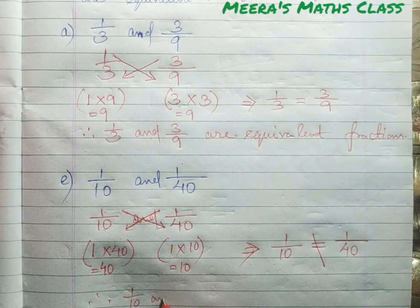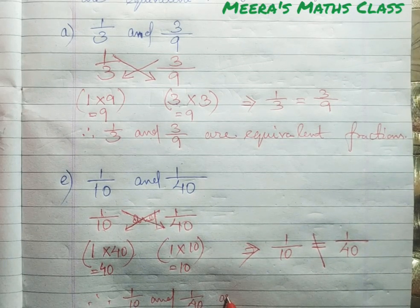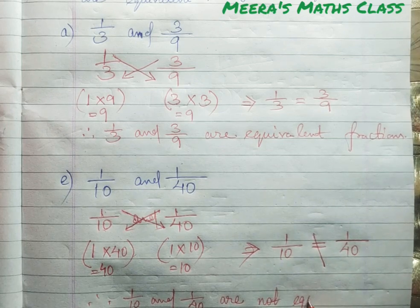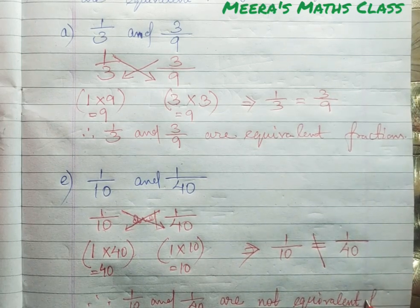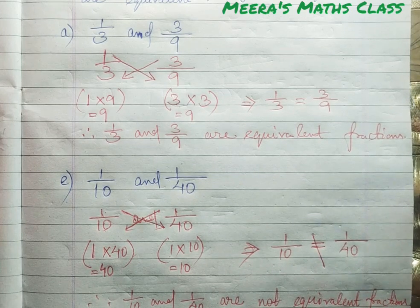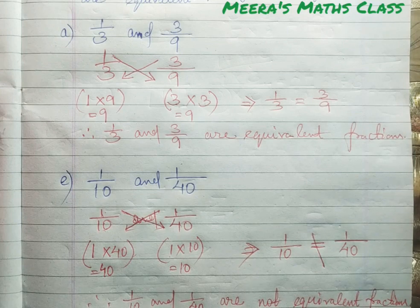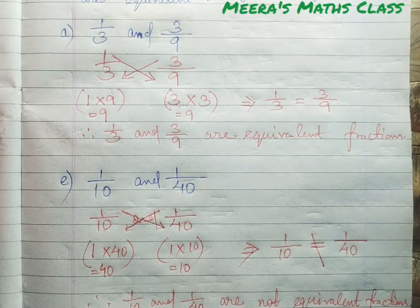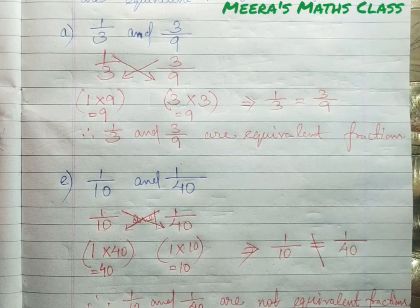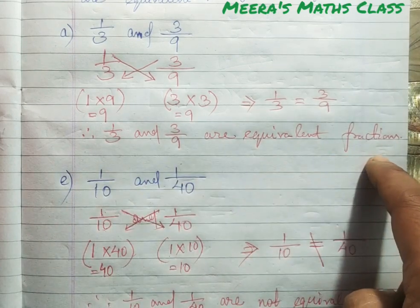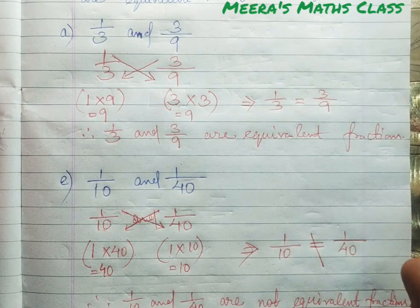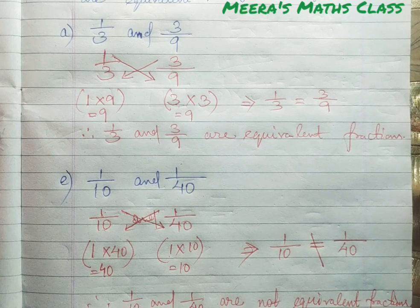So 1/10 and 1/40 are not equivalent fractions. Children, I hope you understood. Now start with the other questions and complete the worksheet. For question 2 which is true or false, you can do it the same way, and instead of writing the conclusion line you can write true or false. I hope you can complete this worksheet. Thank you, children.